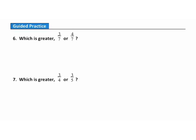Now it's time to check your understanding of comparing fractions with the same denominators and same numerators. Pause your video player and answer these guided practice questions. When you're done, hit play to see how you did. Question 6: Which is greater, three-sevenths or four-sevenths? Since the denominators are the same, the pieces are the same size — so choose the fraction with more pieces: four-sevenths. Question 7: Which is greater, three-fourths or three-fifths? Since the numerators are the same, choose the fraction with fewer pieces, indicating larger pieces — three-fourths is larger than three-fifths because fourths are larger than fifths.